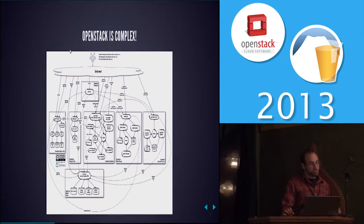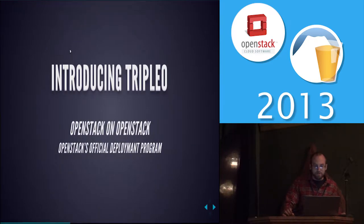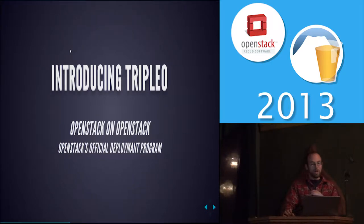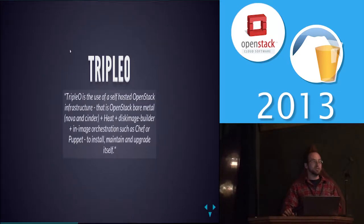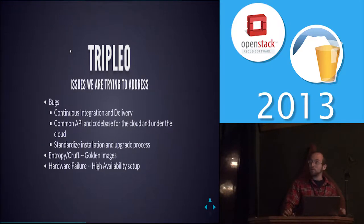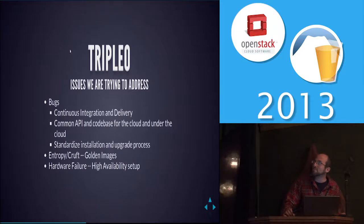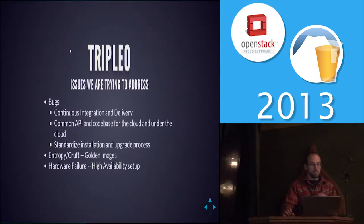For hardware failure, we use standard high availability techniques. There are several pieces of the puzzle for deploying something like OpenStack: provisioning, software configuration, state, and orchestration. In OpenStack we already have two great pieces — orchestration via Heat and provisioning via Nova. Instead of virtual machines, we use bare metal machines with the same API on top, using a bare metal driver instead of a hypervisor. DiskImageBuilder builds the golden images. OSApplyConfig and OSRefreshConfig manage the configuration and state on the machines.